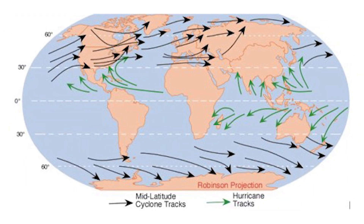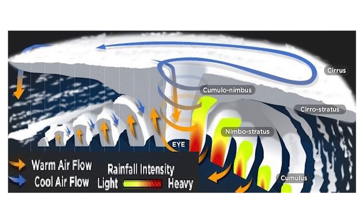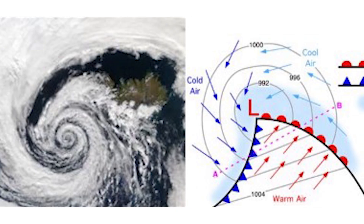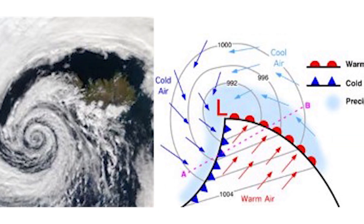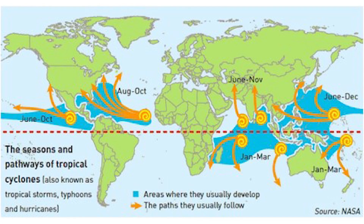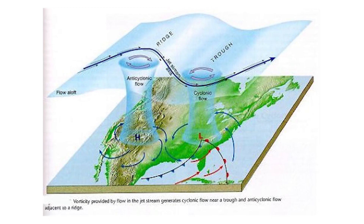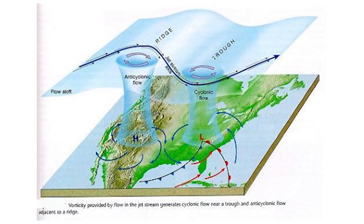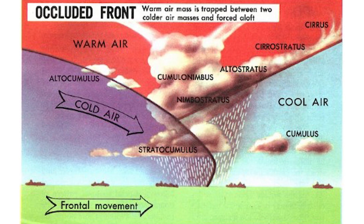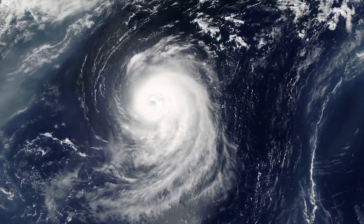Tropical cyclones are low-pressure systems that form over warm tropical waters. They typically form when the sea's surface temperature is above 26.5 degrees Celsius. Tropical cyclones can continue for many days, even weeks, and may follow quite erratic paths. A cyclone will dissipate once it moves over land or over cooler oceans. Tropical cyclones are limited to small areas, with a typical size of 100 to 500 kilometers in diameter, which varies with the strength of the cyclone.